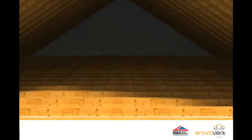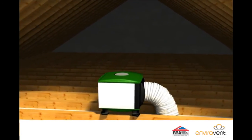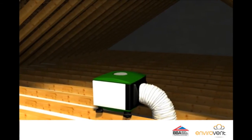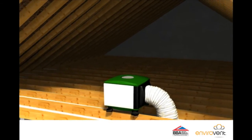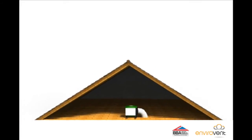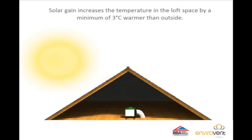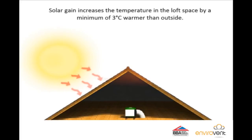The roof tiles on a house often act as solar collectors and will radiate heat into the loft space. According to a recent Energy Saving Trust report, the Good Practice Guide, the average solar gain in a loft space throughout the heating season is at least 3 degrees, resulting in over 550 kilowatts of free energy.